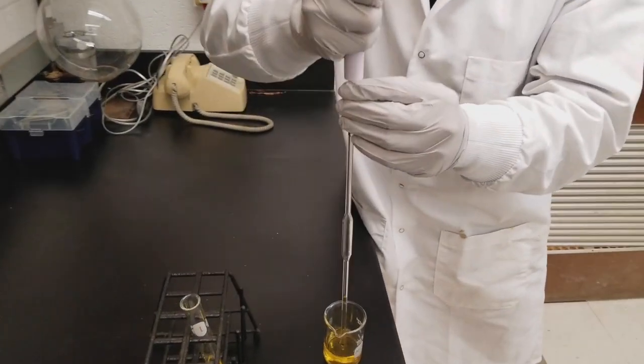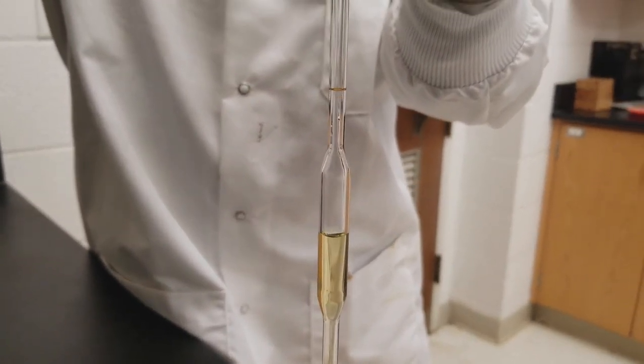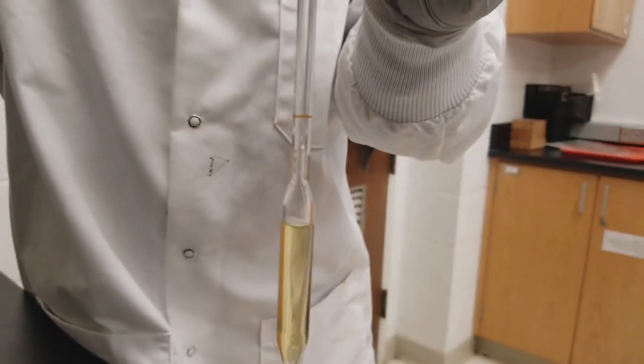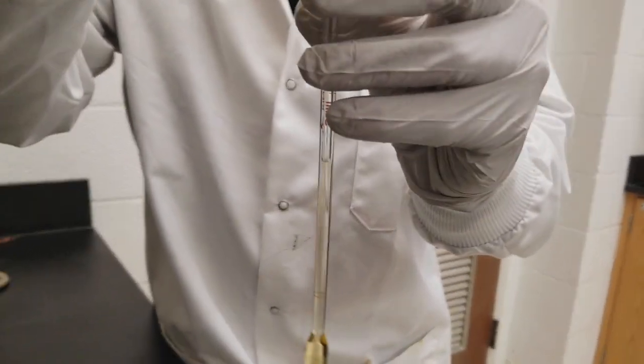Dip the pipette into the solution and start to siphon it up by gently releasing your pipette bulb. It will fill the bottom part of the pipette very quickly, the middle part a little slower, and as you get to the top it'll go quick again.